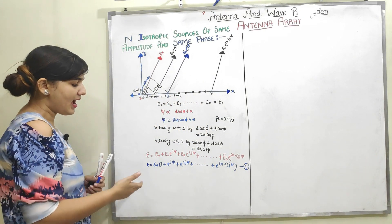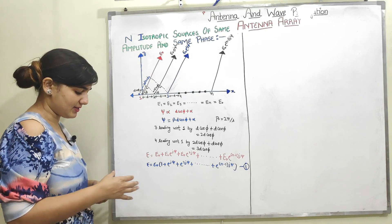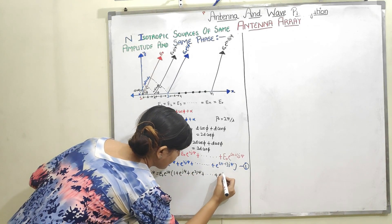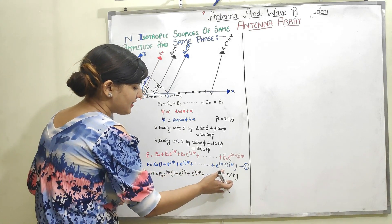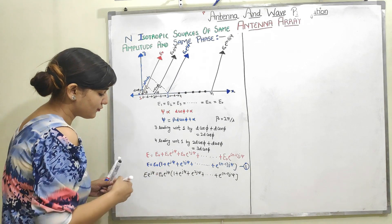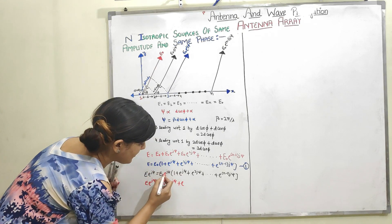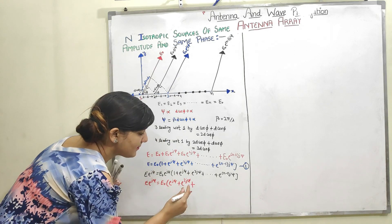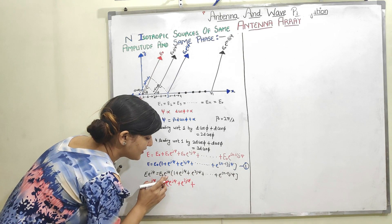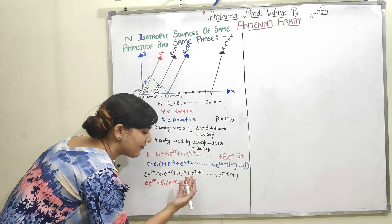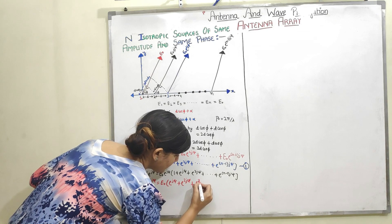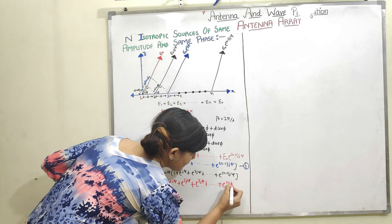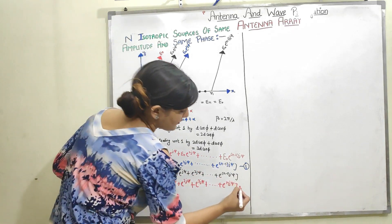To simplify further, I multiply equation 1 by e^(j·psi). When I multiply all terms by e^(j·psi), e^(j·psi)·e^(j·psi) = e^(j·2·psi), e^(j·2·psi)·e^(j·psi) = e^(j·3·psi), and so on, leaving us with e^(j·N·psi) at the end. I call this equation 2.